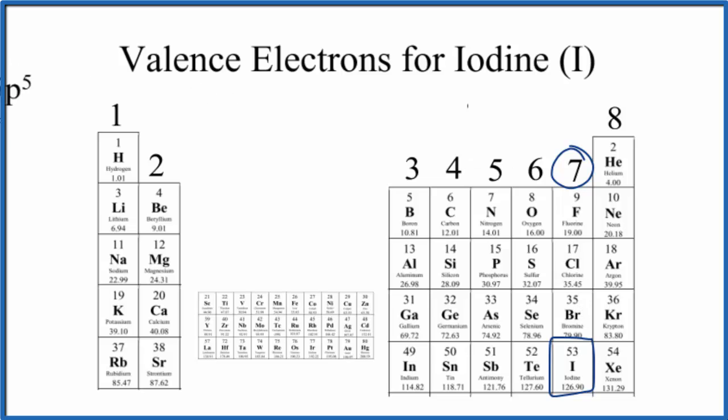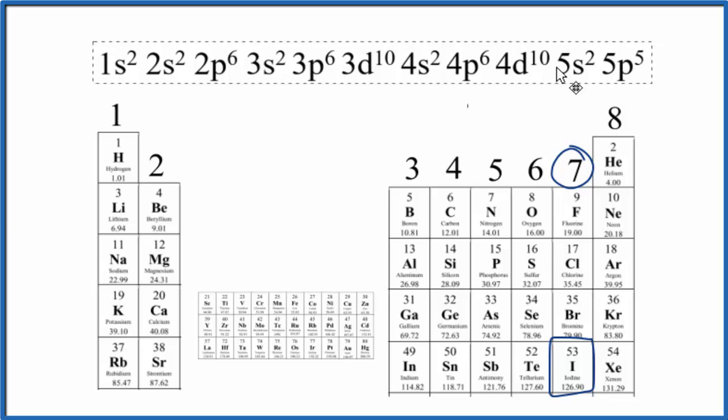We can also look at the electron configuration for iodine to figure out the number of valence electrons. So we look at the highest energy level, that's the fifth energy level here, and we have two plus five. So we have seven valence electrons in the highest energy level here for iodine, which is what we found when we looked at the periodic table.